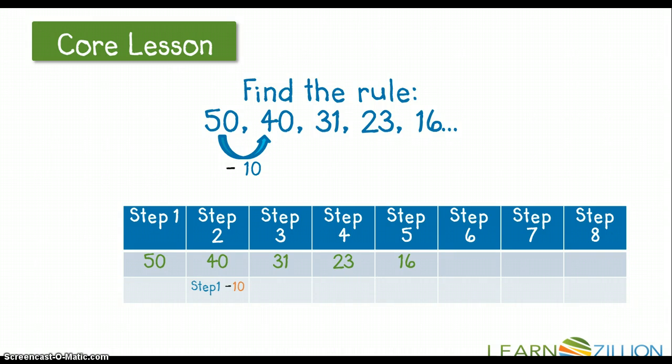Okay, so I will plug in my rule down here, just to give myself a little bit of peace of mind. So from 50, step 1, I subtracted 10, and I got 40. Now, here, I'm looking, and from 40 to 31, I'm noticing that I'm subtracting 9. Okay, so 10, 9, I'm seeing a pattern.